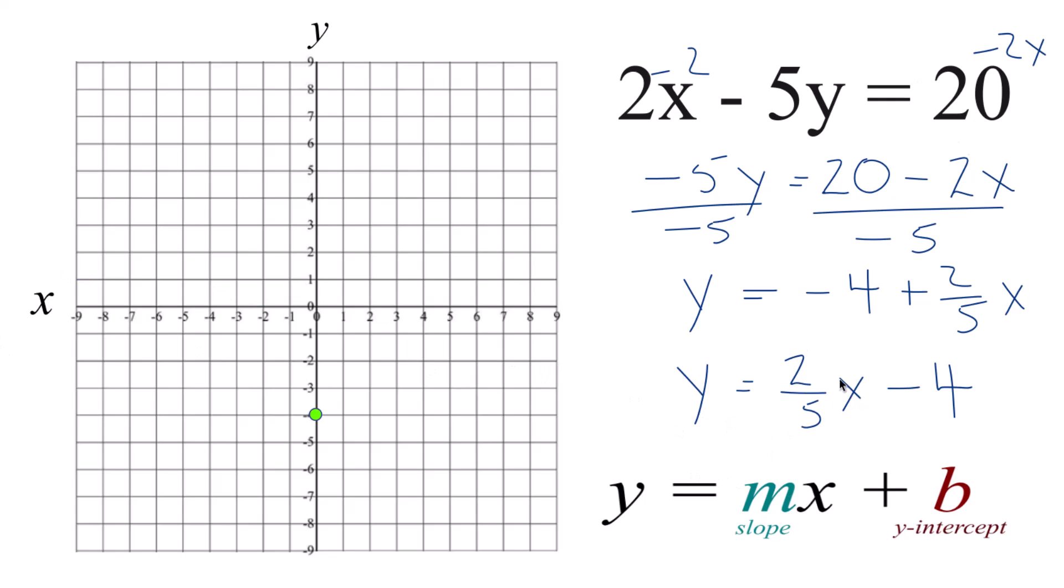And then for the slope, that's the 2 fifths there. 2 is the rise, 5, that's the run.